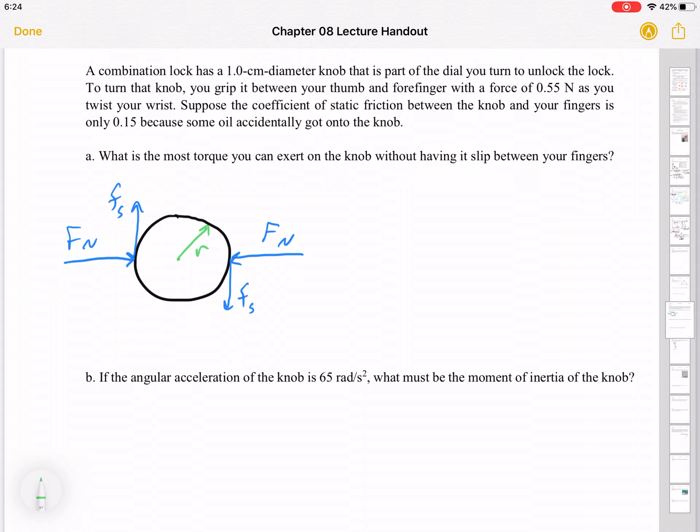So what is the most torque you exert without having a slip? So the biggest torque we can apply here is when that frictional force is the maximum frictional force. Right? If we try to go any faster than that, our fingers are going to slip. Because we're exceeding the maximum static frictional force. So we need to remember, Fs max. What is that? Well, it's mu s times a normal force. I have a normal force and I have mu s. So I can calculate that number.